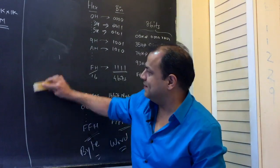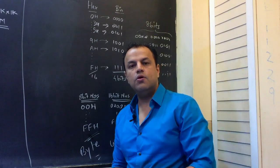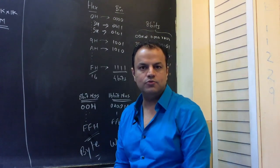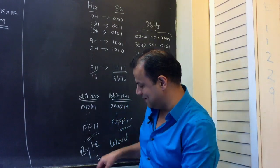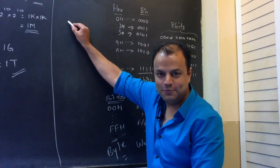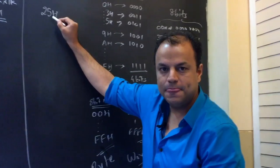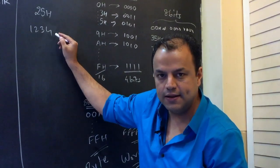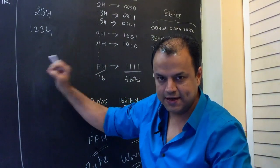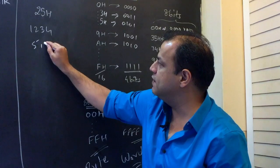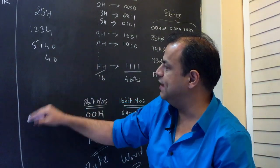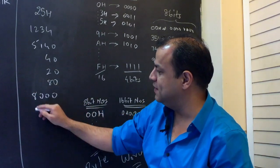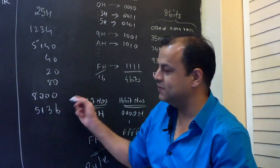I'm going to do a small exercise. I'm going to go on writing numbers on the board and you're going to tell me whether it's an 8-bit number or a 16-bit number. Say it out loud. 25 — how many bit number? 8-bit. 1234 — 16-bit. Every number in our subject is hexadecimal. 5140 — 16-bit, 40 — 8-bit, 20 — 8-bit, 80 — 8-bit, 8000 — 16-bit, 5136 — 16-bit number.